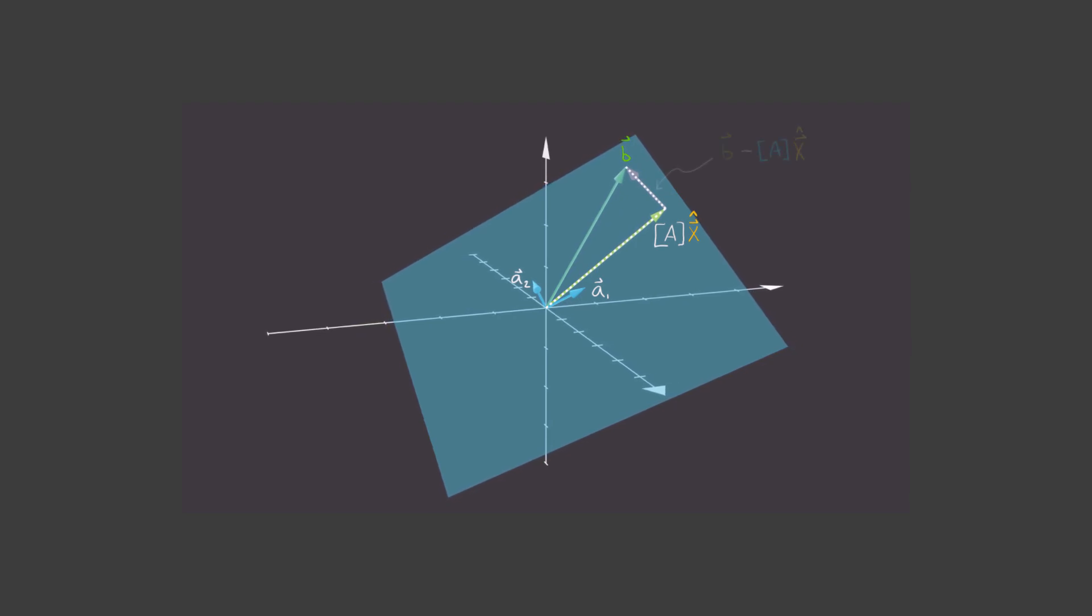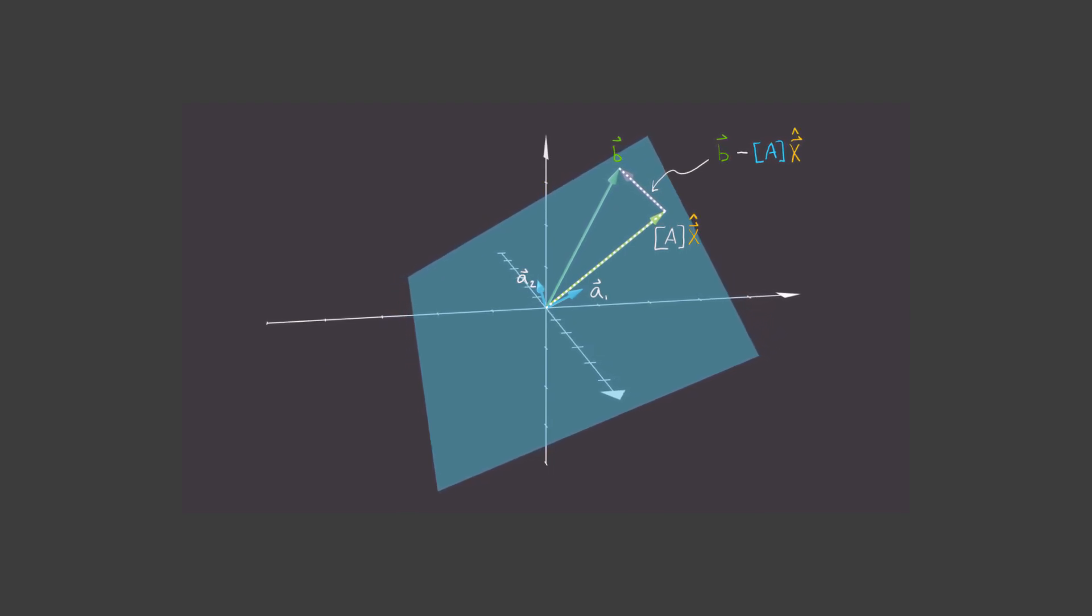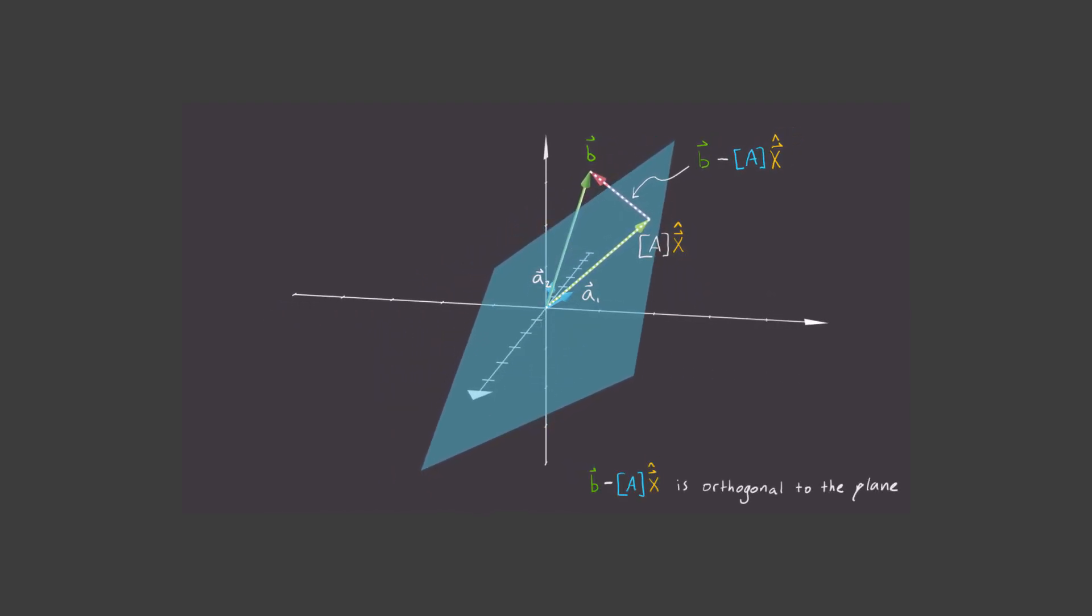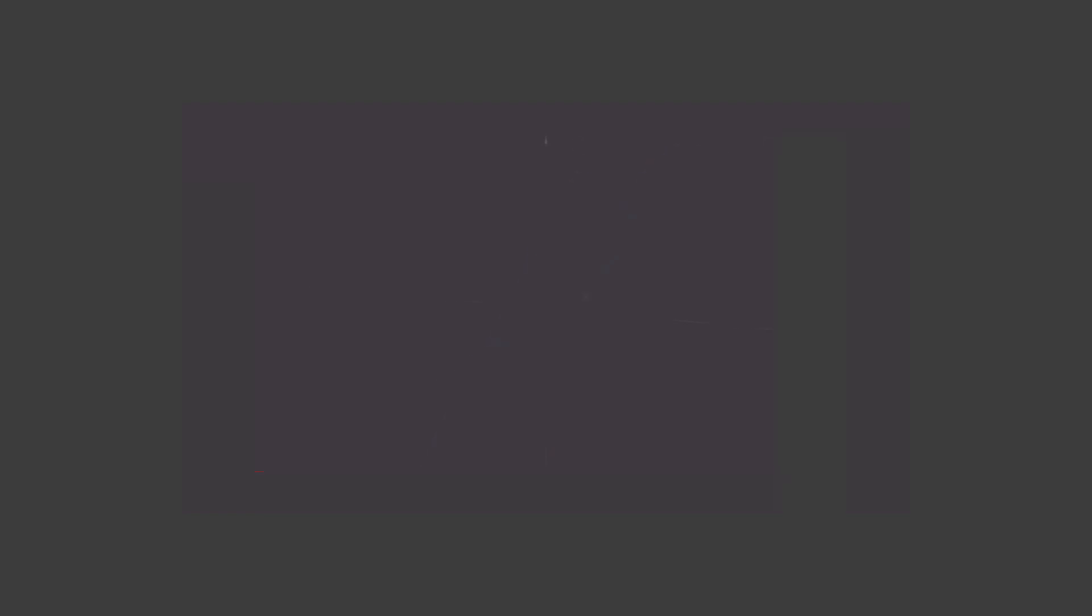Now this other vector that I've shown here must be B minus Ax hat. And notice that it has to be perpendicular to the surface. In other words, B minus Ax hat is orthogonal to the plane. And in other words, that just means that B minus Ax hat must be orthogonal to the vectors a1 and a2 that span the plane.